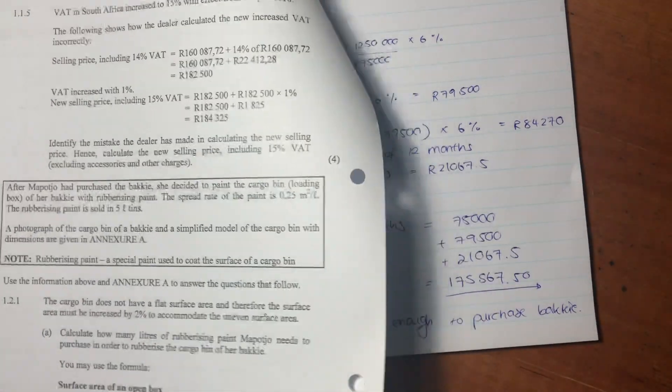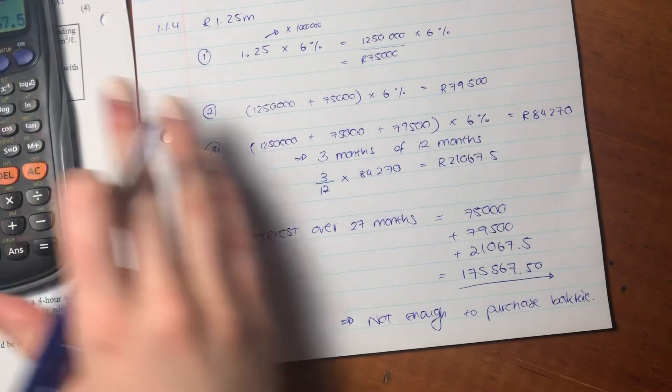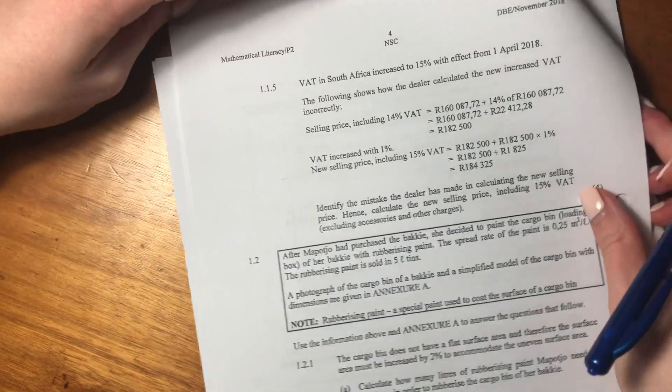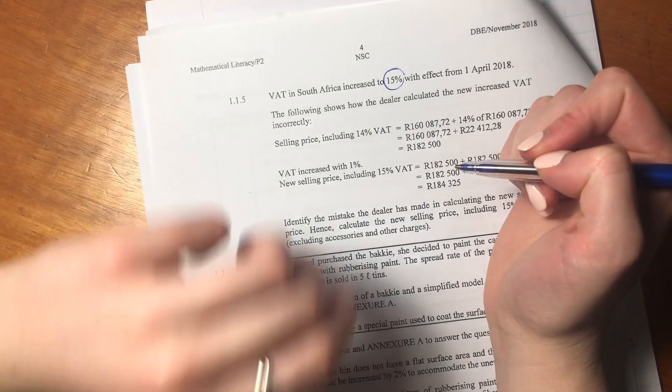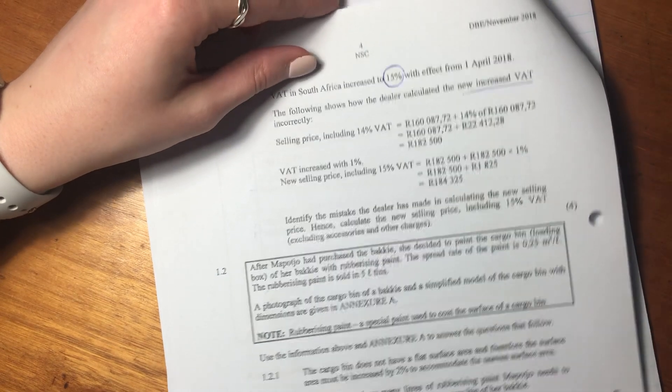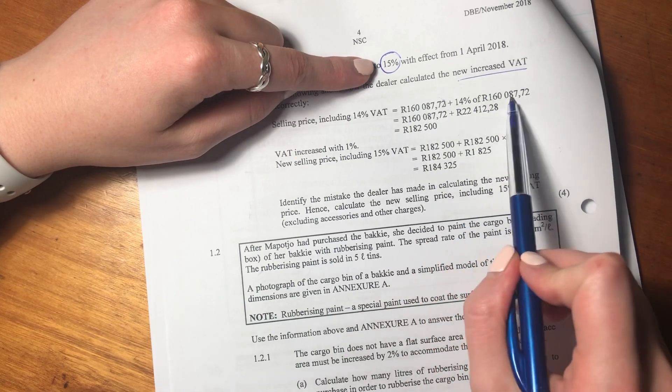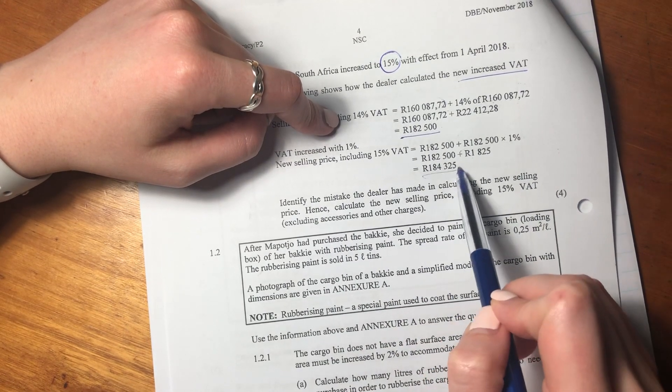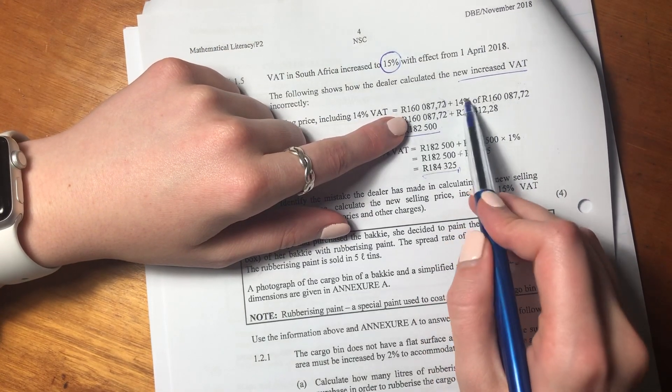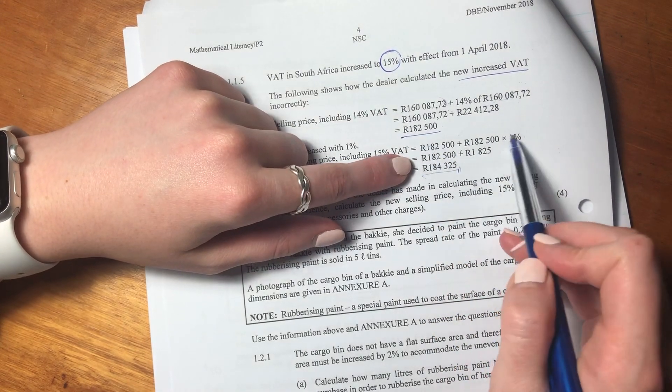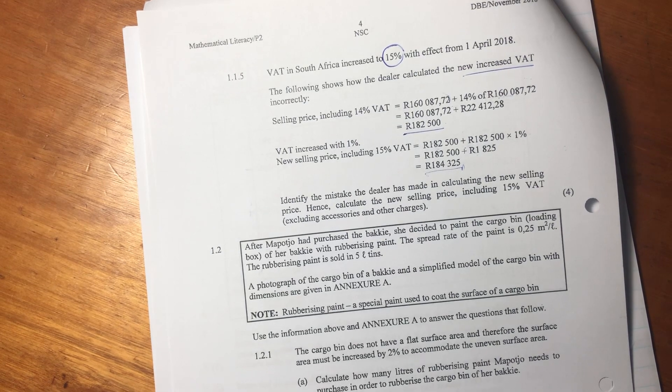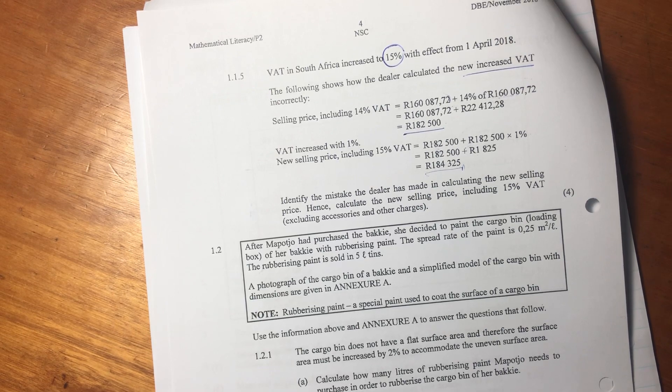Let's now move on to the last question of this question, which is on VAT. So VAT is something that comes up quite often, so don't get too hung up on it, but it's an important one to remember. So it says VAT in South Africa increased to 15% with effect from 1 April 2018. The following shows how the dealer calculated the new increase VAT incorrectly. So originally when it was 14%, he just said the amount plus 14% of the amount. So then here it said increase by 1%, and he just said that amount plus 1% of that amount. So here he used 14% of the 160. Here he just said whatever it was at 14 plus an additional 1% of what that amount is. So then it says identify the mistake the dealer has made in calculating the new selling price. Hence, calculate the new selling price, including 15% VAT.